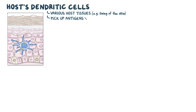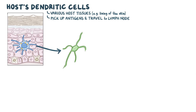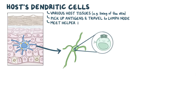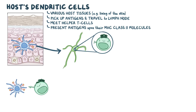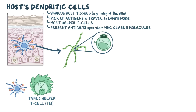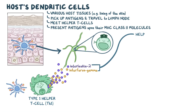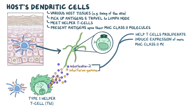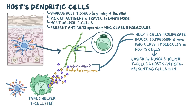Shortly after transplantation, the host dendritic cells, which usually hang out in various host tissues like the lining of the skin, might pick up antigens from that tissue and travel to the nearest lymph node, where a lot of the immune cells coming from the donor live. There they meet with the helper T cells and present those antigens upon their MHC class II molecules. If the donor helper T cells recognize these antigens as foreign, they differentiate into type 1 helper T cells, or Th1 cells. Th1 cells then start releasing the cytokines interleukin-2 and interferon gamma, which help them and other T cells in the area proliferate. These cytokines also induce the expression of more MHC class II molecules on the surface of host cells, making it easier for the donor's helper T cells and host antigen-presenting cells to interact.